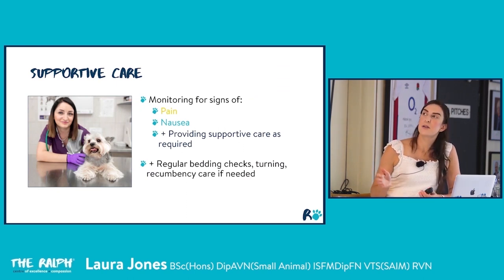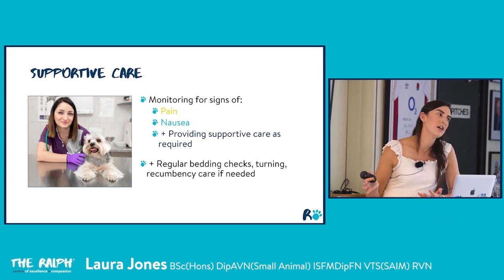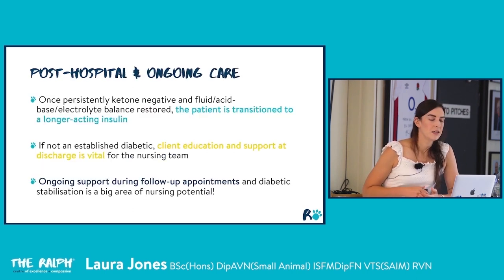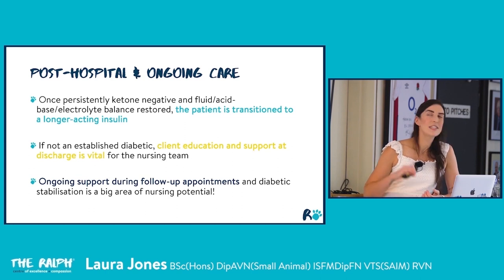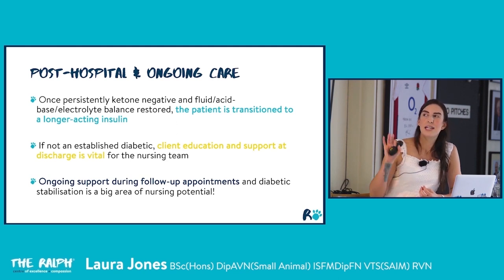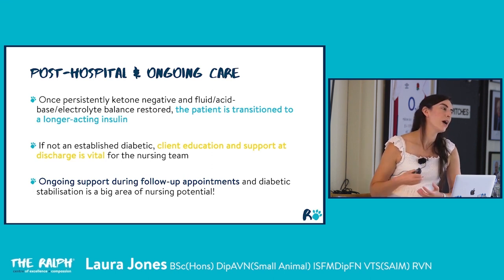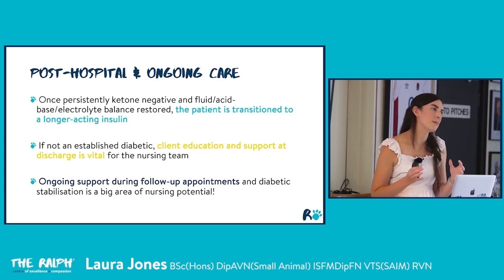Supportive care in hospital includes ongoing monitoring for pain and nausea, with appropriate correction. If the patient is recumbent, recumbency care nursing considerations apply. Once persistently ketone-negative with corrected dehydration, acidosis and normal electrolytes, transition to an appropriate long-acting insulin — generally caninsulin for dogs, prosinc for cats. If not a previously established diabetic, this is the time to begin client education: supporting them at home, teaching insulin injections, explaining what to monitor for, and ensuring they feel equipped to manage diabetes at home when they leave.